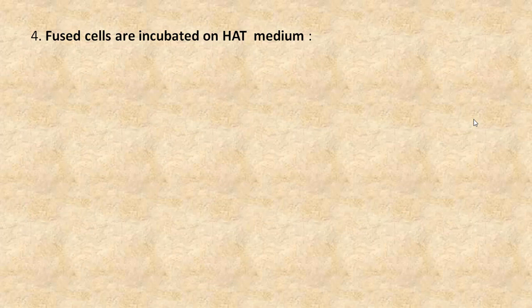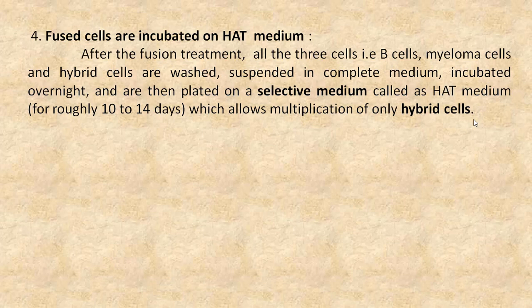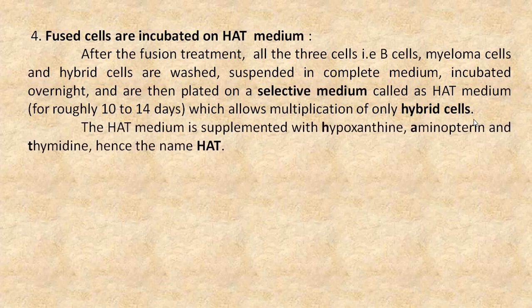The fourth step is that fused cells are incubated on HAT medium. After the fusion treatment, all three cells — B cells, myeloma cells, and hybrid cells — are washed, suspended in complete medium, incubated overnight, and then plated on a selective medium called HAT medium, which allows multiplication of only hybrid cells. The HAT medium is supplemented with hypoxanthine, aminopterine, and thymidine — hence the name HAT.